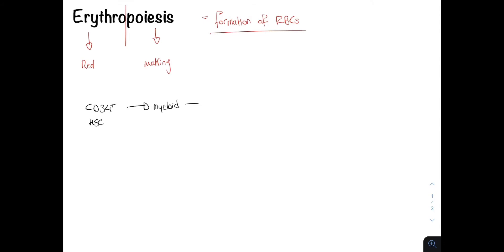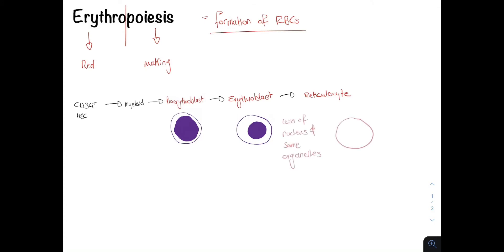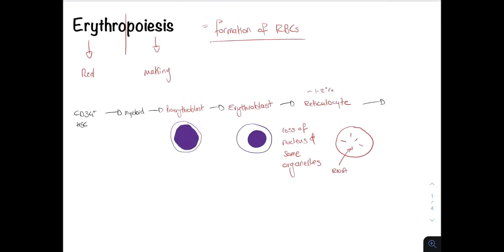Myeloid stem cells can differentiate into proerythroblasts. These are very immature red blood cells with huge nuclei. These can then differentiate into erythroblasts, again very immature but with smaller nuclei. These can differentiate into very important cells known as reticulocytes. Here the erythroblast has lost its nucleus and many organelles, but it's not quite a red blood cell yet. Reticulocytes still contain ribosomal RNA, so they can still synthesize hemoglobin.